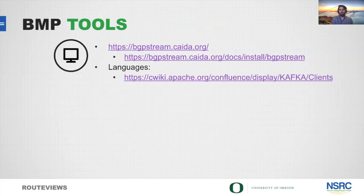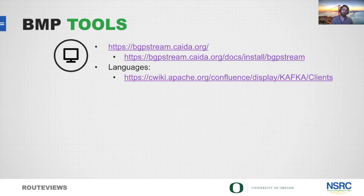In terms of BMP tools, one we really like to focus on is BGP Stream, developed and produced by CAIDA — the Center for Applied Internet Data Analysis. BGP Stream is great because it reads both MRT and BMP data, so it's very useful if you want to look at both real-time and historical data from a single tool or interface. If you're interested in what languages have a Kafka client, the link at the bottom has a pretty exhaustive list.